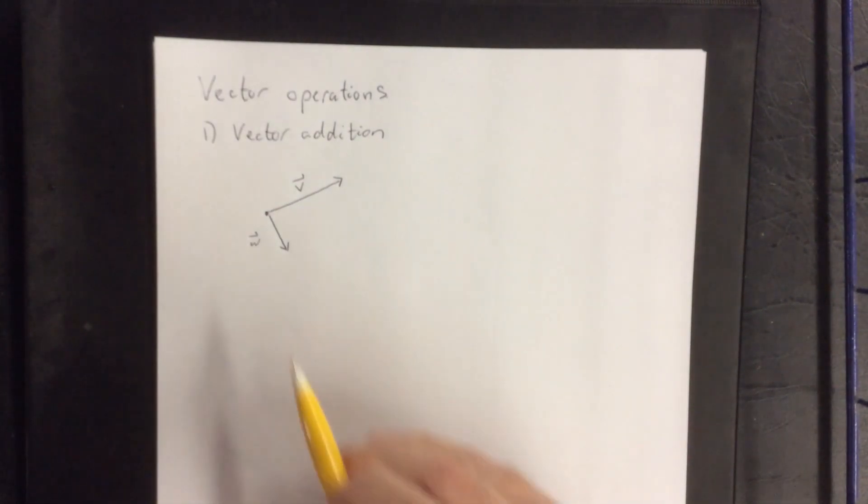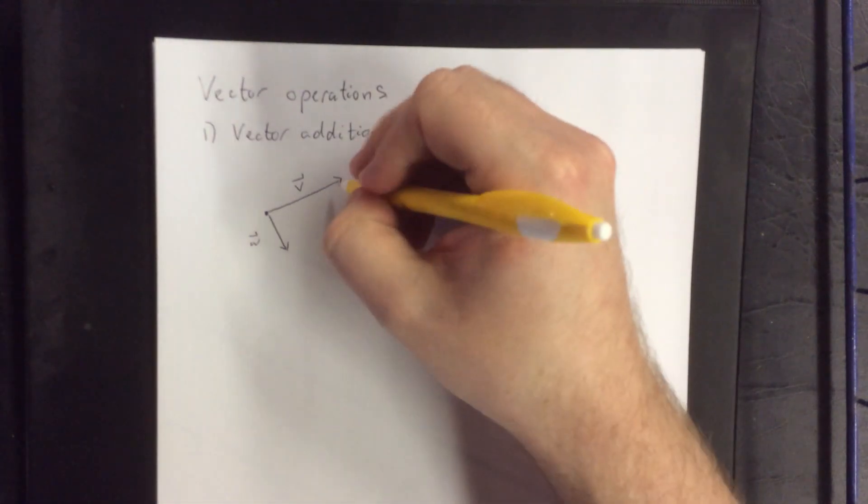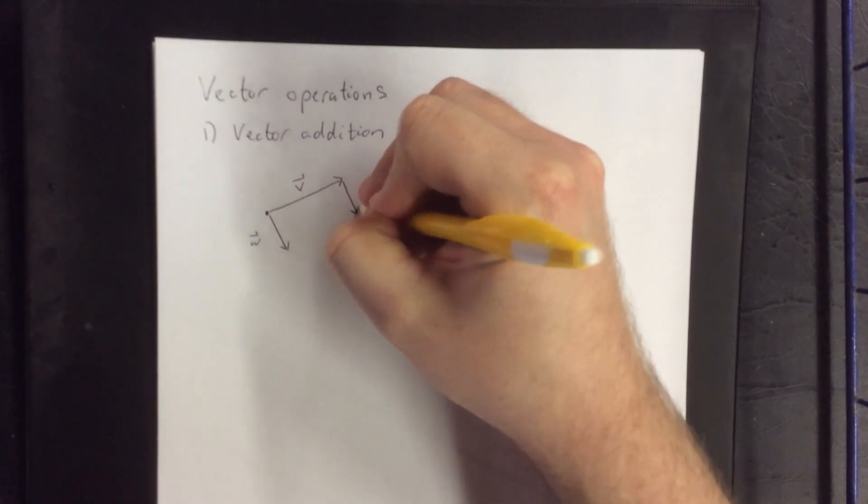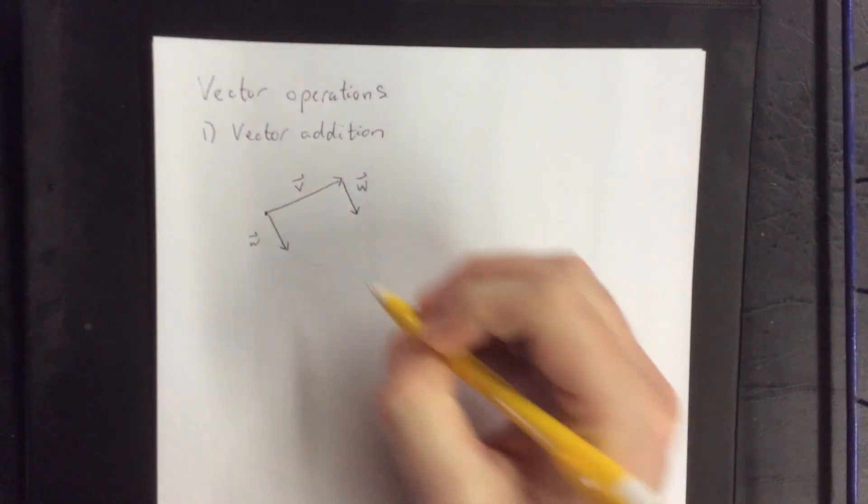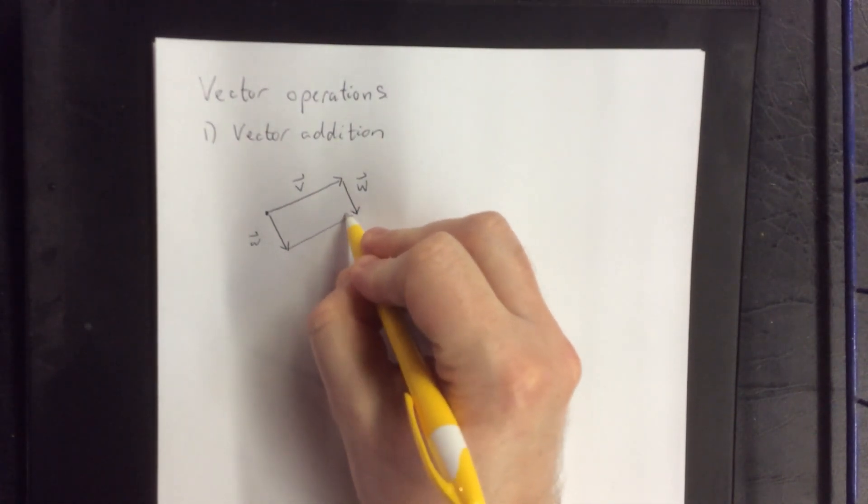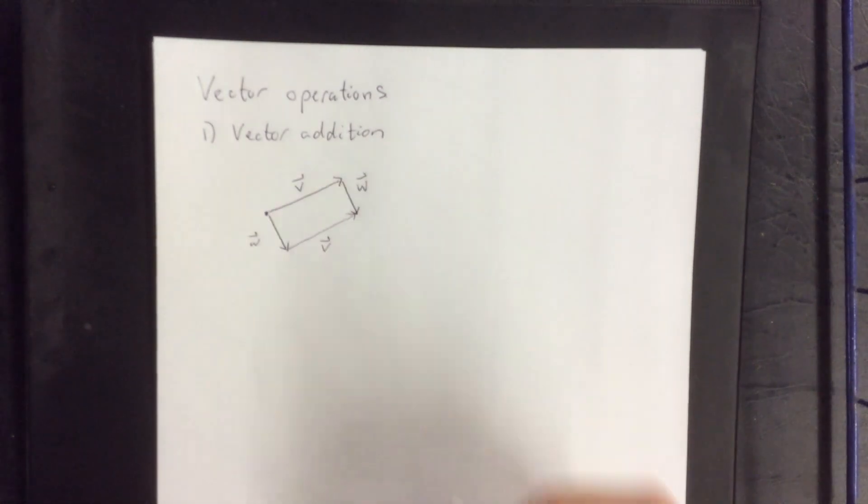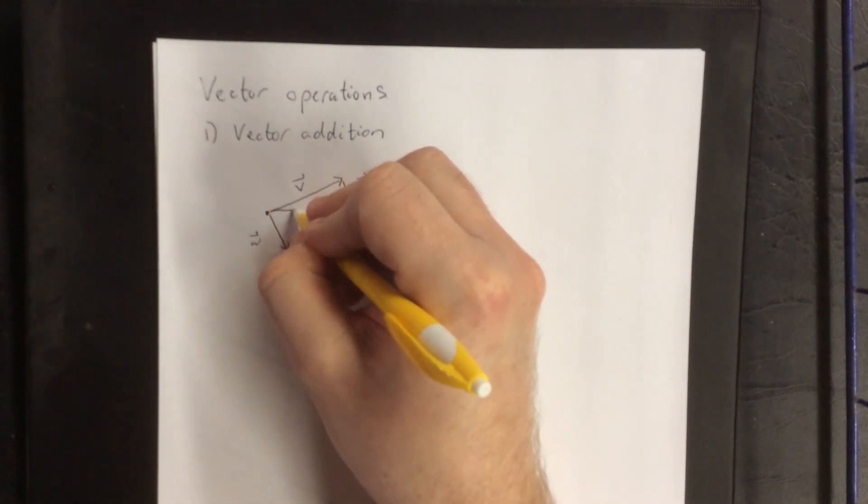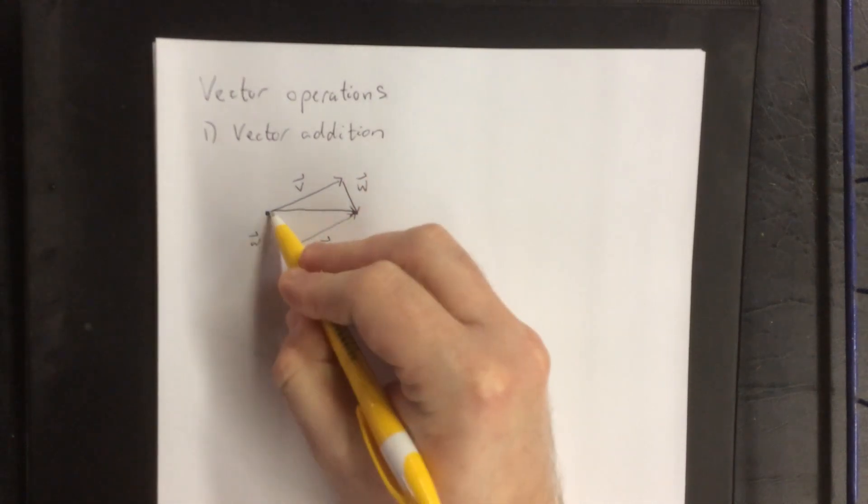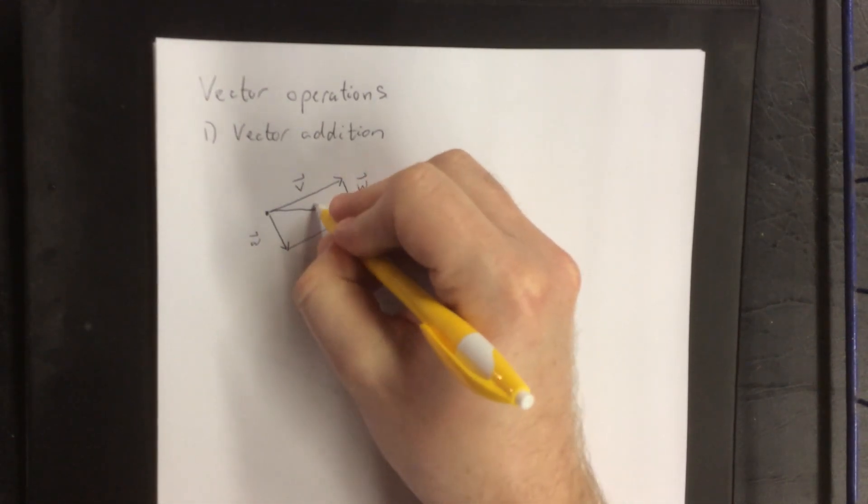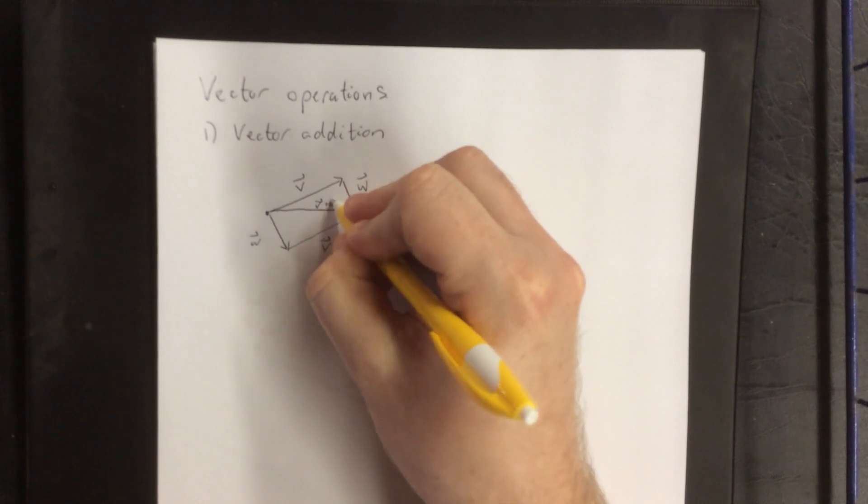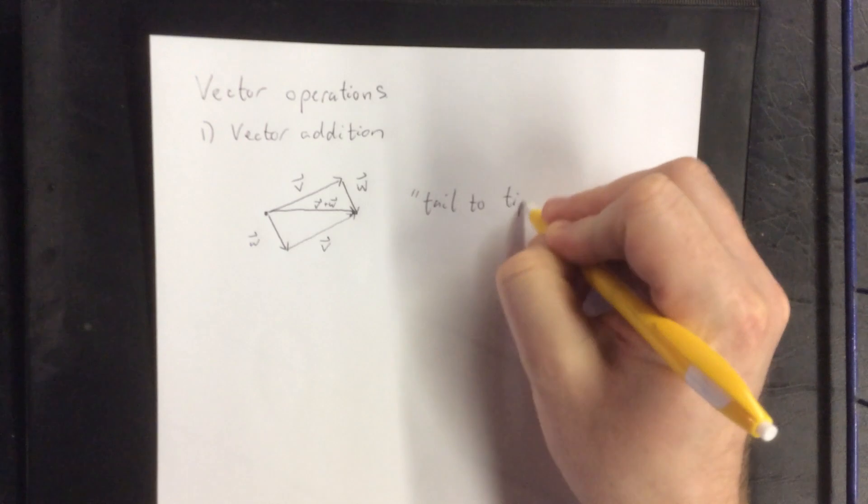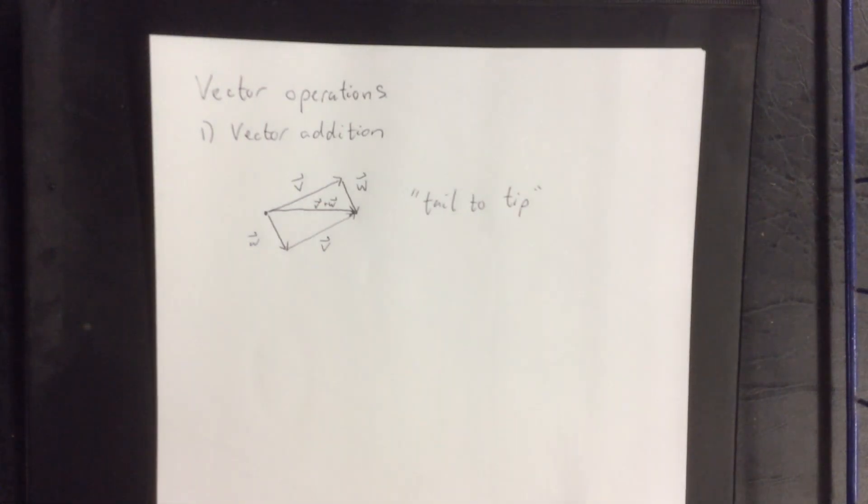If you move the initial point of one of the vectors to the terminal point of the other vector and recopy that same vector, it doesn't matter which way we do it. Ultimately, we're going to wind up creating a little parallelogram here. The resultant vector that takes the initial point of the first vector to the terminal point of the second vector would be the sum of those two vectors, and this is referred to as the tail-to-tip method of adding two vectors together.